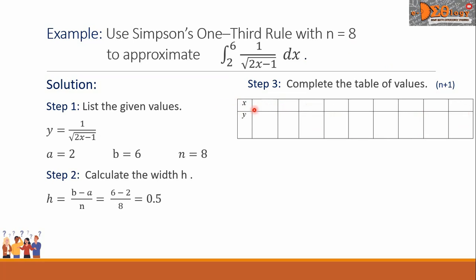For the x row, we have the first blank reserved for the value which is a, and that is 2. For the last blank for x, that is reserved for the value b, that is 6. Now let us complete the values of the remaining boxes. For the next box, we will have 2 plus the value h, that will be 2.5. For the next blank, 2.5 plus h, that will be 3. 3 plus 0.5 becomes 3.5. This 3.5 plus h, we have 4. This pattern will continue up to the last value which is 6.